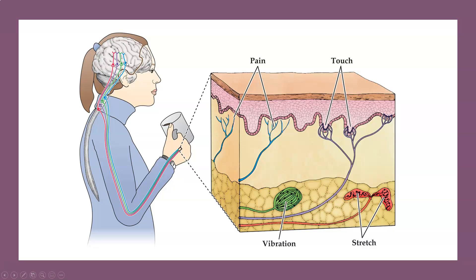The brain integrates all the information coming from these different kinds of cells and puts it into a whole experience. Individual cells might pick up on different facets of an object or an experience and send that information to the brain, but that one cell alone wouldn't communicate anything meaningful. Altogether, with all four or five different kinds of cells working together, the brain can integrate them into a whole piece of information — a whole experience.